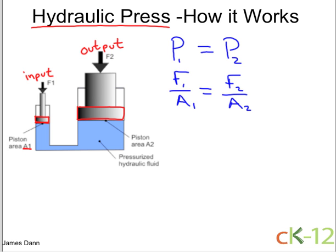And now, if we multiply both sides by A2, we can isolate for F2, the output force. And we get that F2 is equal to F1 multiplied by the ratio of the areas, A2 over A1.